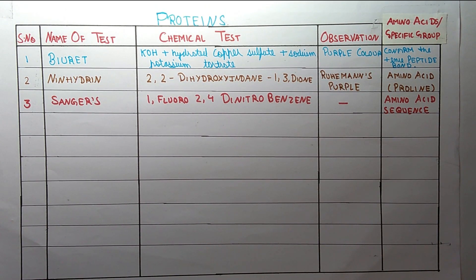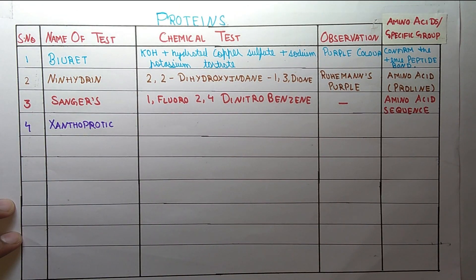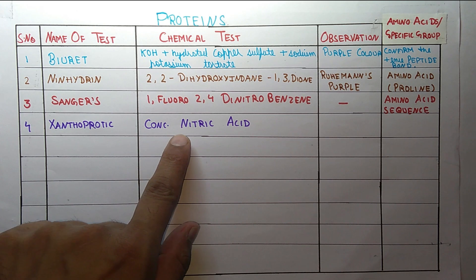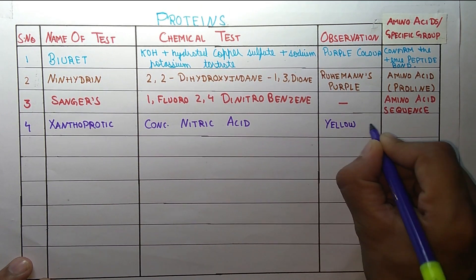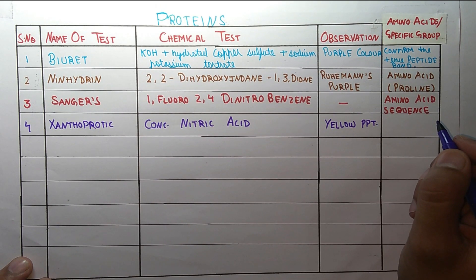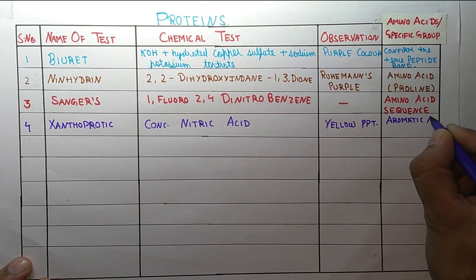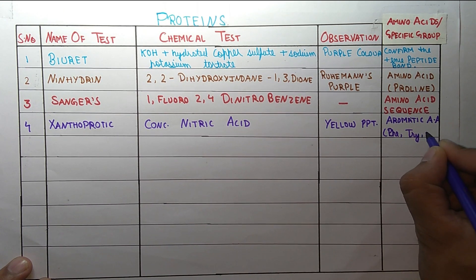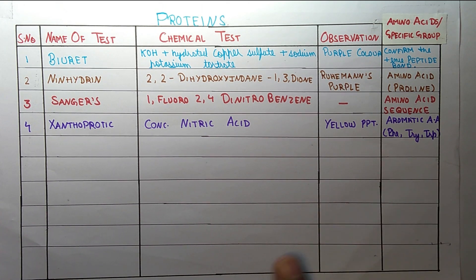The next test is the Xanthoproteic test. In this test we use concentrated nitric acid. The color observed is a yellow precipitate. It confirms aromatic amino acids — specifically phenylalanine, tyrosine, and tryptophan. Students, short forms are written here, so please note the full forms in your notebook.